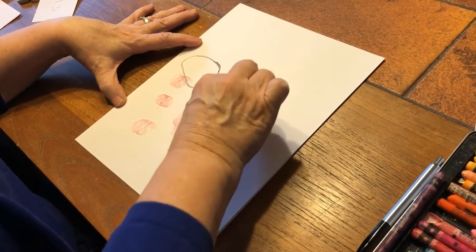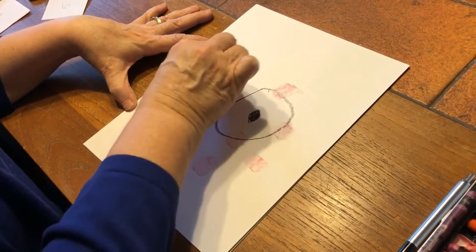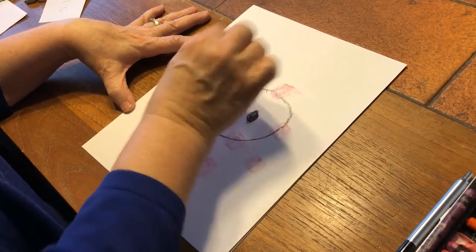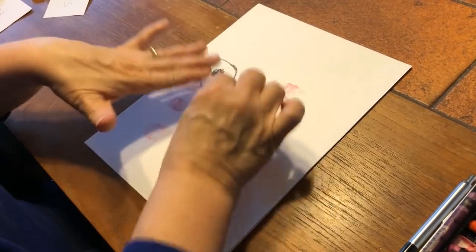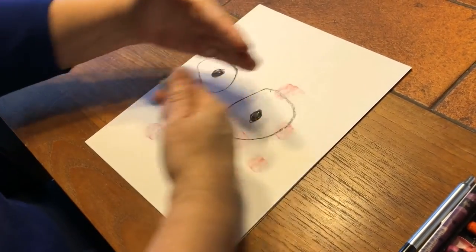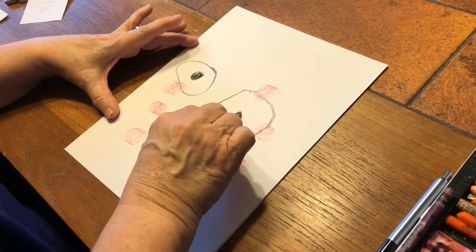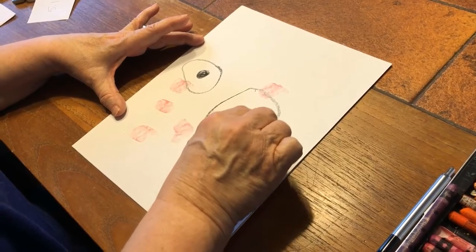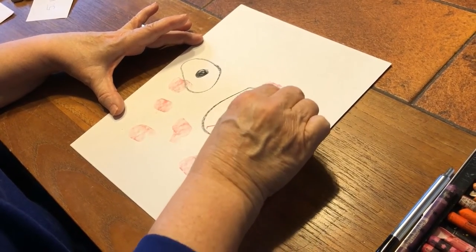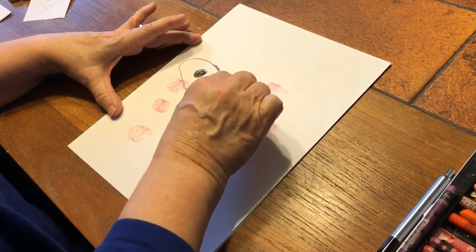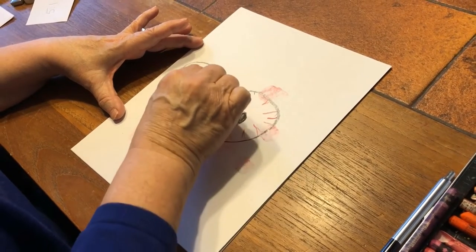And we're gonna put the pupil here and the pupil there. All right, you can see how they're not the same size and they're not even. They're sort of all over the place and I'm gonna give it some little red veins to make it look bloodshot. Don't know if these eyes are bloodshot or not, but we're gonna do it because it looks scary.